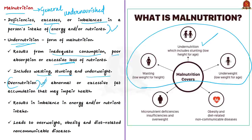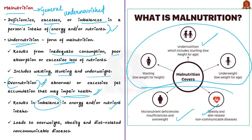Overnutrition is defined as abnormal or excessive fat accumulation that may impair a person's health. The individual is getting more nutrients than needed, resulting from excessive intake of specific nutrients. Some nutrients are in excess while others are lacking, causing an imbalance in energy or nutrient intake. This imbalance results in overweight, obesity, and diet-related non-communicable diseases such as heart disease, stroke, diabetes, and some cancers.